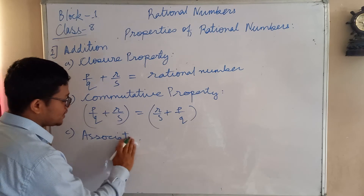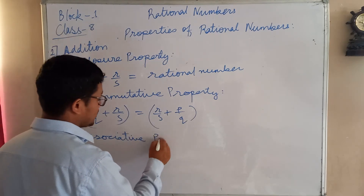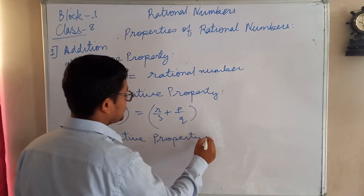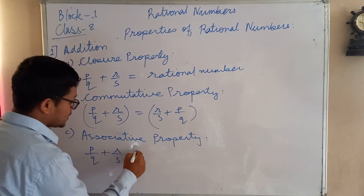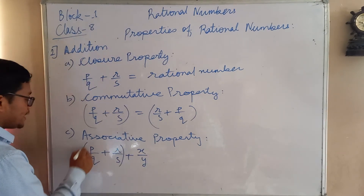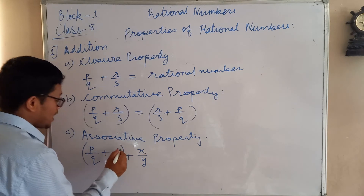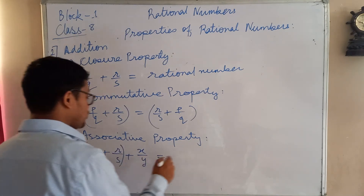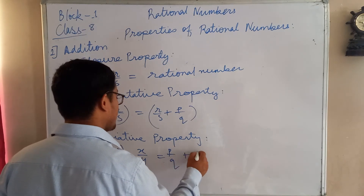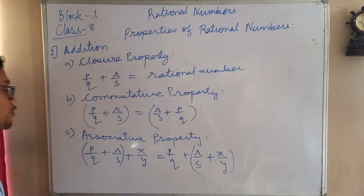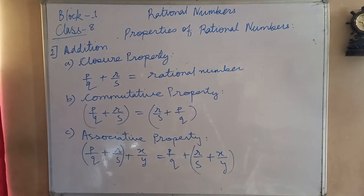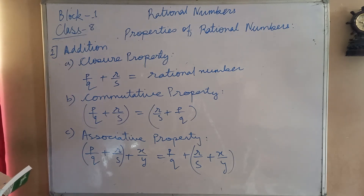The third is the Associative Property. Associative property is similar to commutative property but uses three different rational numbers. Just imagine if you add two of them first and then add x by y, or if you leave p by q separately and add r by s plus x by y together first — on both sides the result will always be the same.